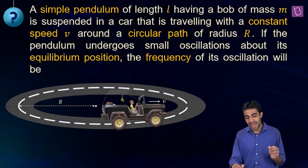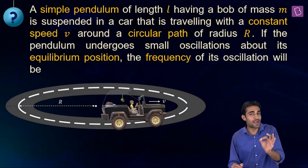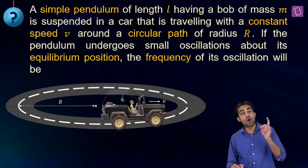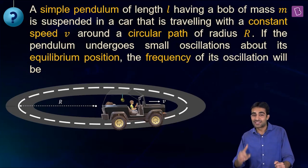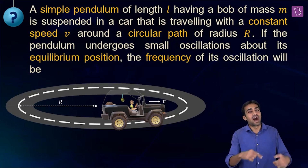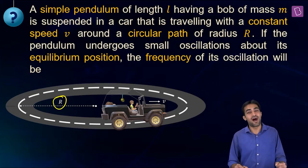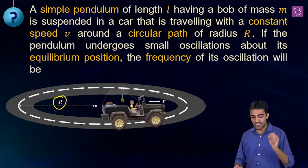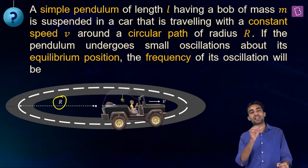A simple pendulum of length L with a bob of mass M is suspended in a car traveling with constant speed V around a circular path of radius R. If the pendulum undergoes small oscillations about its equilibrium position, we have to find the frequency of oscillation.